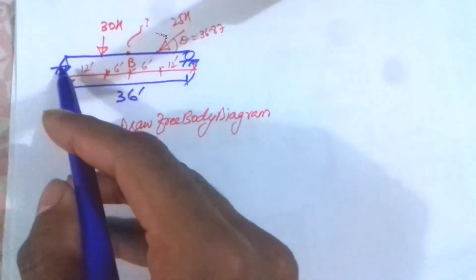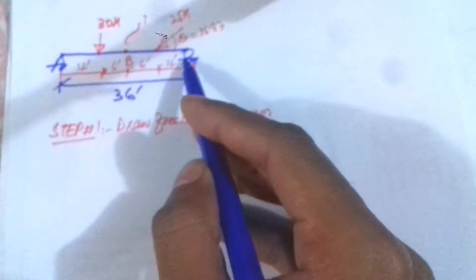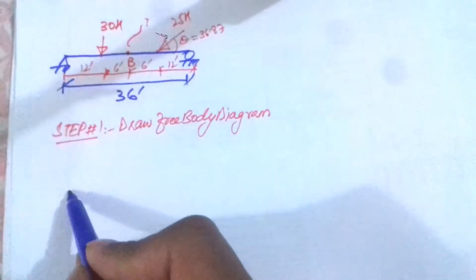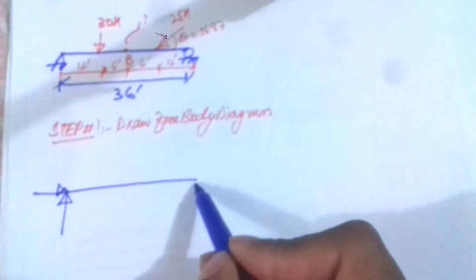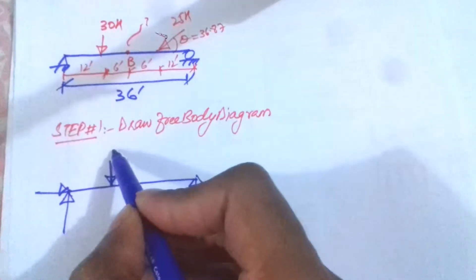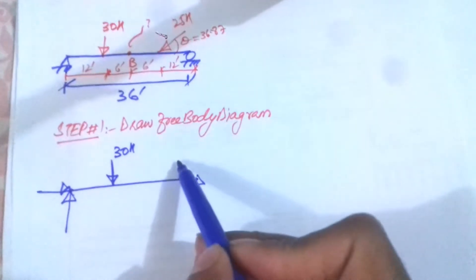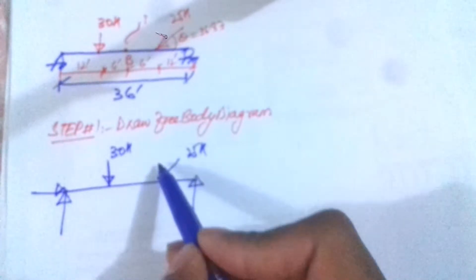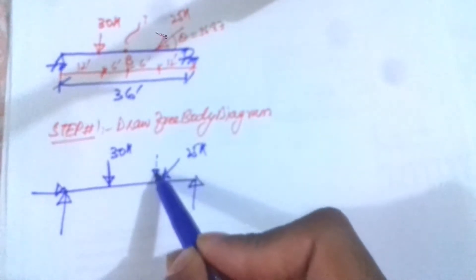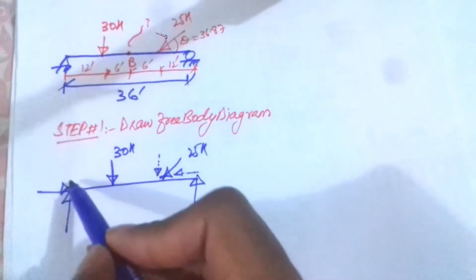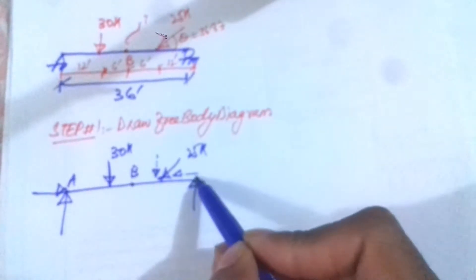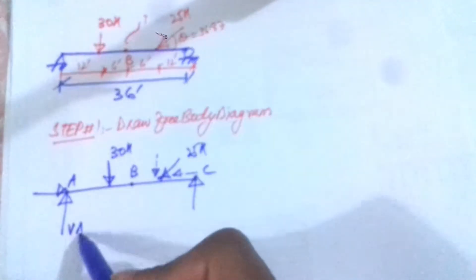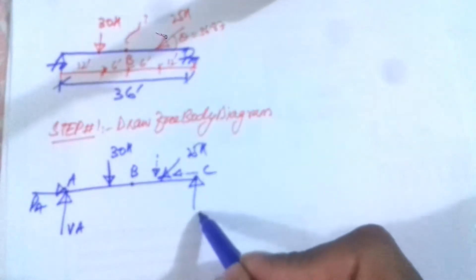In the free body diagram, there is a pin or hinge support on one end and a roller support on the other, giving two support reactions. I take this as point A, this as point B, and this as point C. I label the reactions as VA at A, PA (horizontal) at A, and VC at C. The distances remain the same: 12 feet, 6 feet, 6 feet, 12 feet.